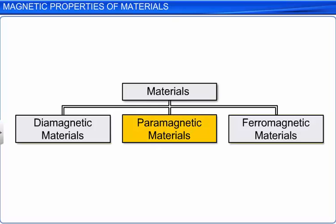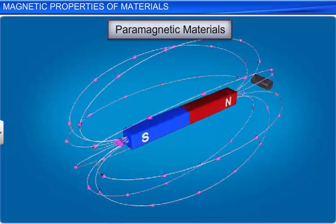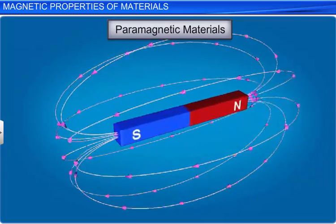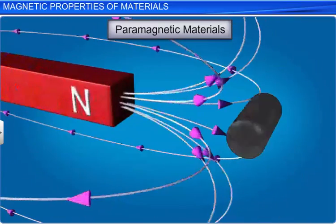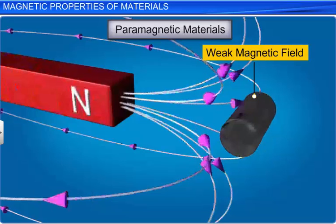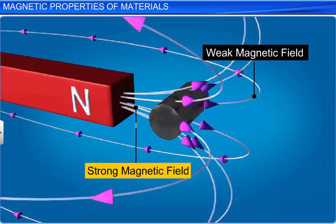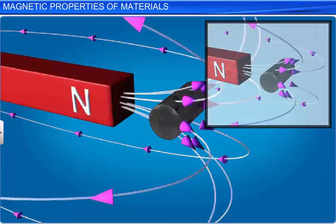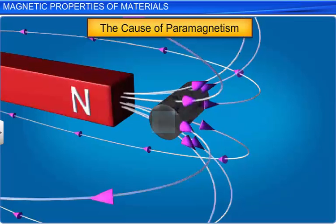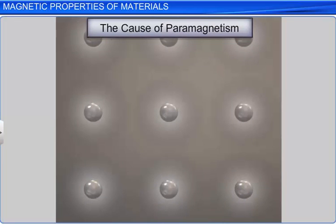Let us discuss about paramagnetic materials. Paramagnetic materials are the materials that are weakly attracted by the magnets. When a bar of paramagnetic material is placed in a non-uniform external magnetic field, it tends to move from a region of weak magnetic field to a stronger magnetic field. The magnetic field lines get concentrated in the paramagnetic material and the magnetic field inside the material increases. In the case of paramagnetic material, individual atoms possess a permanent magnetic dipole moment due to the orbiting electrons in the atom.